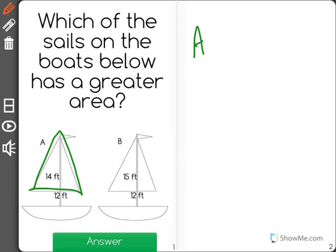So the base in the A sail is 12 feet, and the height is 14 feet.